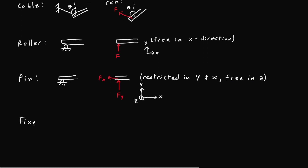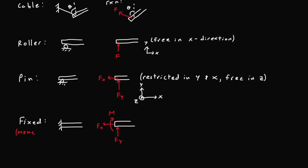Lastly, let's take a look at a fixed support, which is essentially a body fixed to a wall. The reactions for this type of support are very similar to those of a pin; however, this support also generates a moment about the z axis, since the body is no longer able to rotate freely. So essentially the body is restricted in all directions.